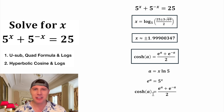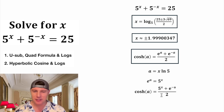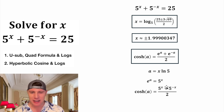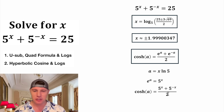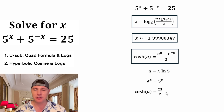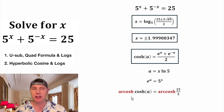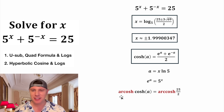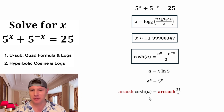Let's copy down our hyperbolic cosine notes. In the place of e to the a, let's plug in 5 to the x, and in the place of e to the negative a, let's plug in 5 to the negative x. Now we have 5 to the x plus 5 to the negative x, which we know equals 25, so let's plug in 25. Now we have hyperbolic cosine of a equals 25 over 2. To get a by itself, we do the arc hyperbolic cosine — or hyperbolic cosine inverse — of both sides, which cancels the hyperbolic cosine and leaves us with a.